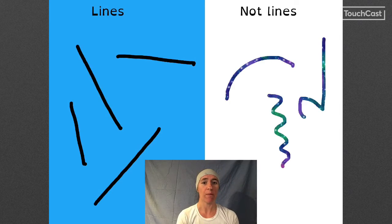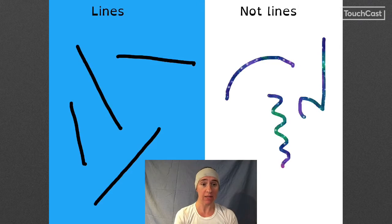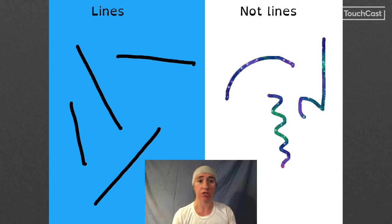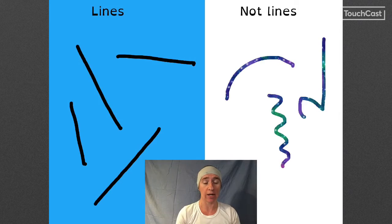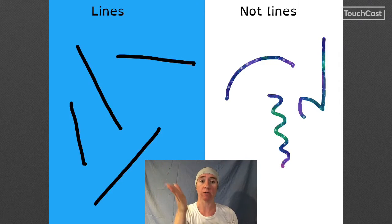Can you describe what makes the shapes on this side lines and the shapes on this side not lines? The difference when we talk about lines in geometry is that lines are perfectly straight and technically they go on to eternity, unless you are talking about a section of the line. So the ones on this side are lines because they are, as best as I could draw them, perfectly straight.